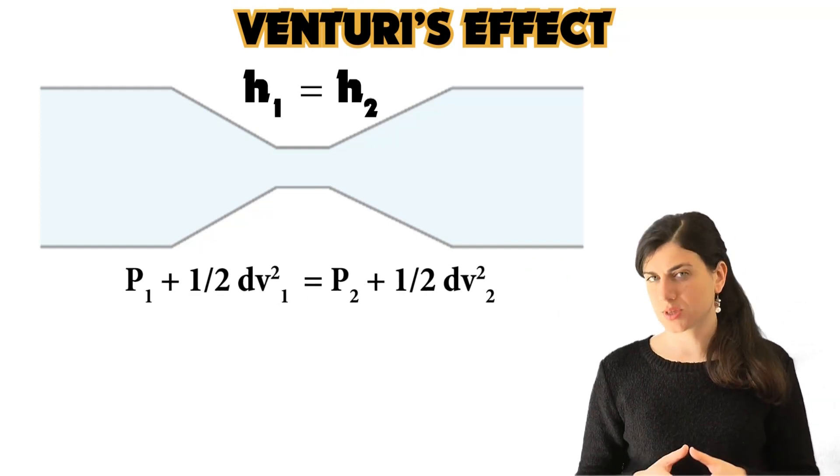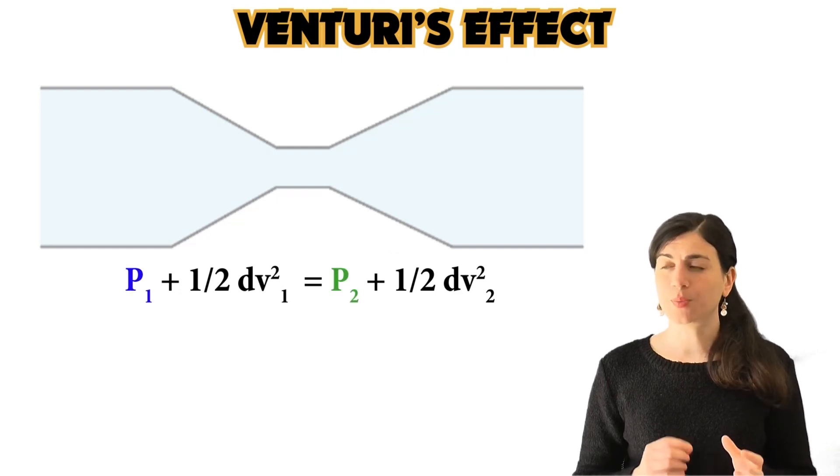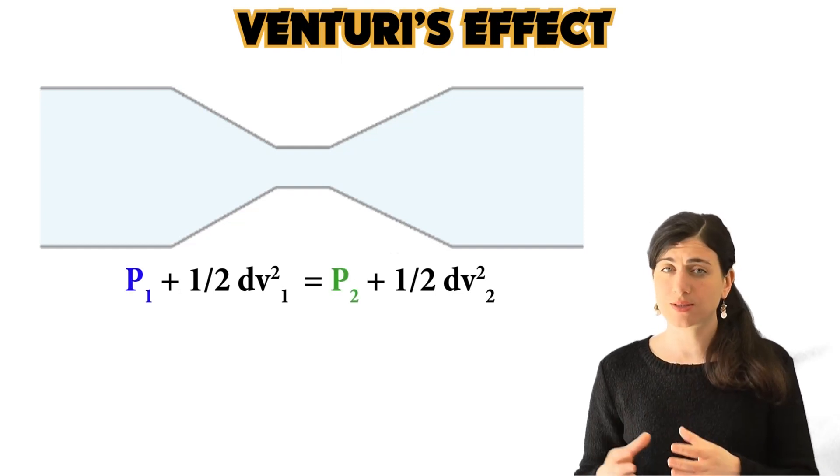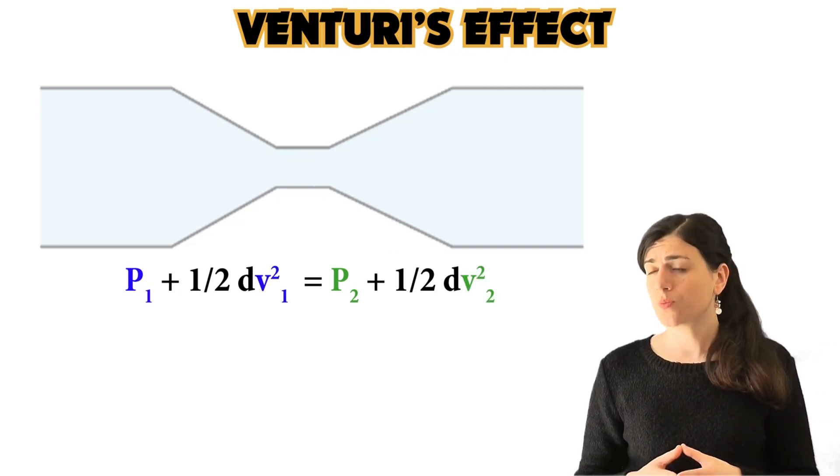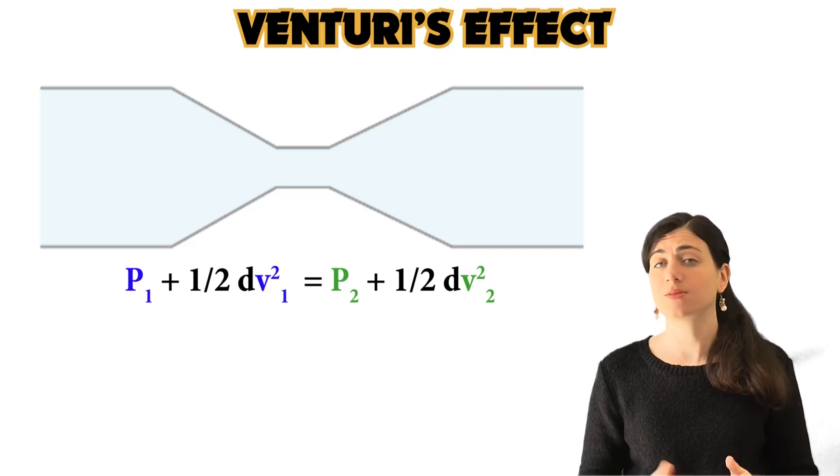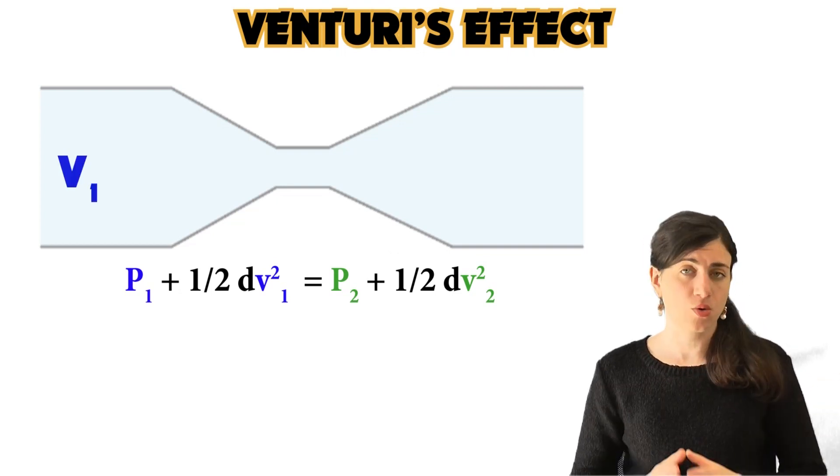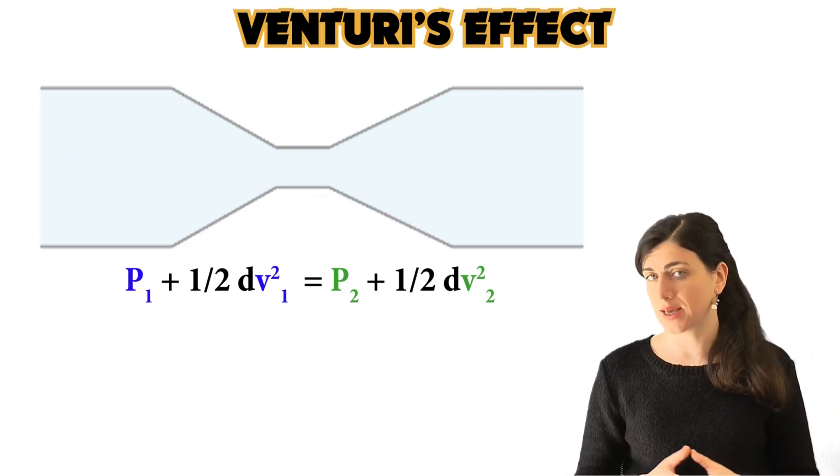Now, let's see the variables of this equation. P1 and P2 are the pressures of this fluid at the entrance and in the narrowing. And then we have D, which is again density.